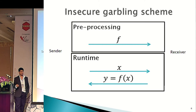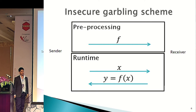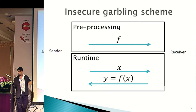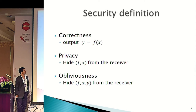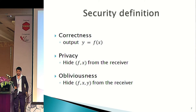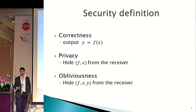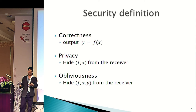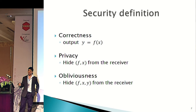Just to remind you quickly what a gobbling scheme is: this would be a completely insecure protocol for gobbling. The sender sends a function f to the receiver, and then later sends the input x to the receiver, and the receiver computes the output. What we actually want from a gobbling scheme is three properties. First, correctness — that it gives the right output. We also want either privacy, which means given the gobbling, the receiver shouldn't learn the function or the input, and then obliviousness, which hides the function, the input, and the output.